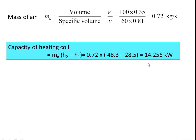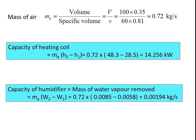Capacity of the heating coil = ma × (h2 − h1) = 0.72 × (48.3 − 28.5) = 14.256 kilowatts. Capacity of the humidifier (mass of water vapor added) = ma × (w2 − w1) = 0.72 × (0.0085 − 0.0058) = 0.00194 kilograms per second.